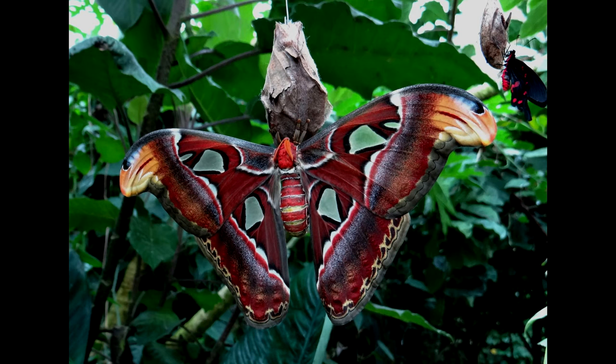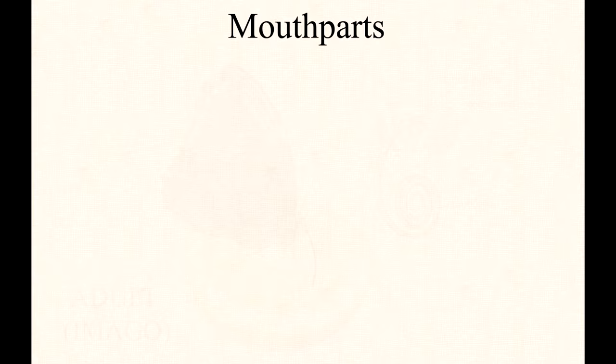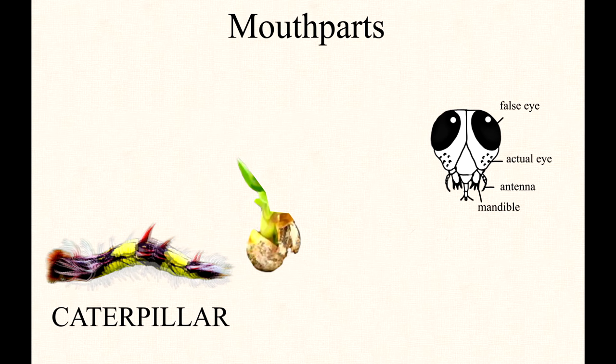However, some adult butterflies do not have a proboscis and they do not eat anything. To compare, a caterpillar's mouth part is entirely different, so it can eat hard leaves.